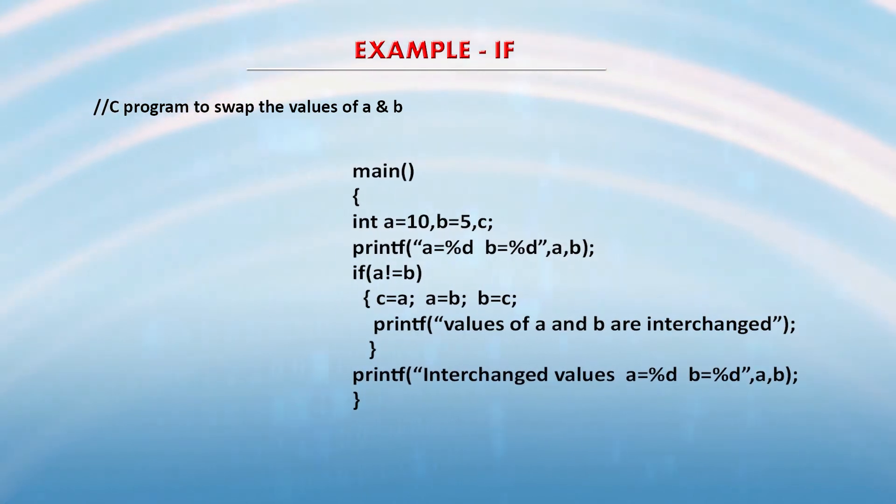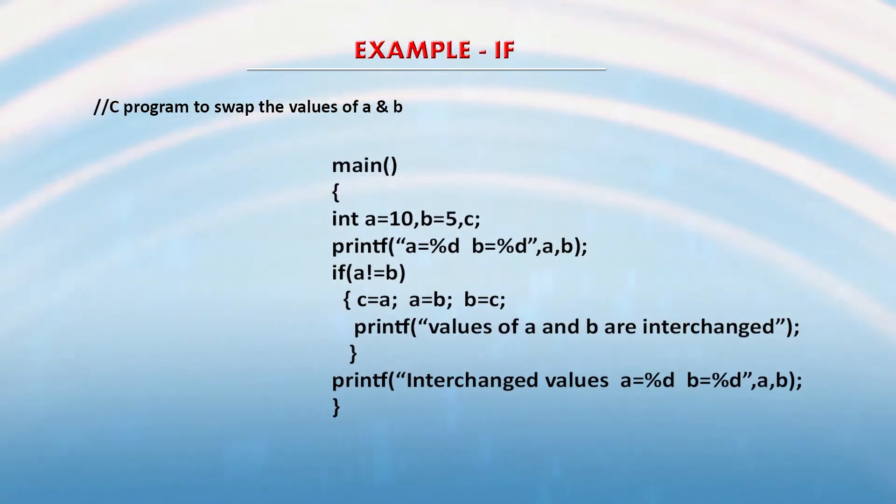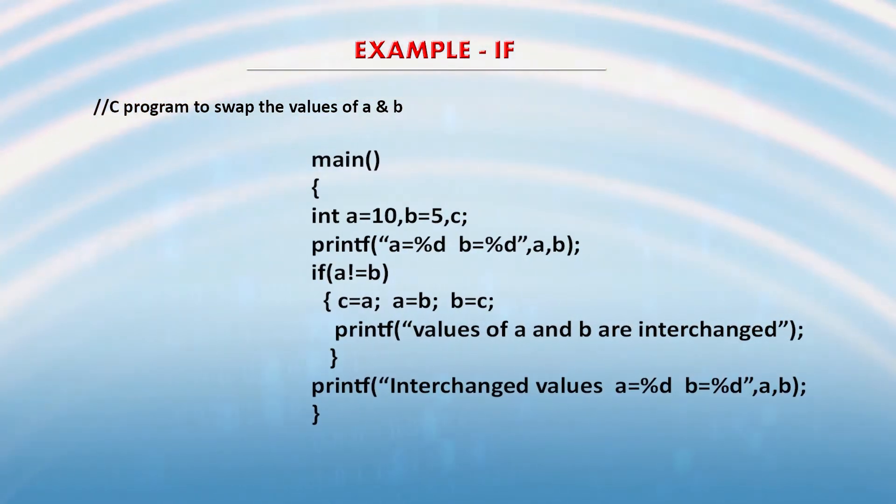Now, a very useful application is swapping variables. Say one variable stores value 5 and another stores value 10, but you want 10 assigned to variable a and 5 assigned to variable b. In order to do this swapping, you need one more variable which is not assigned any value. You have two containers storing something, and to swap their values, you need one more empty variable. So to implement this logic, we have three variables a, b, and c. Variable a is assigned value 10, variable b is assigned value 5, and variable c is not assigned any value.